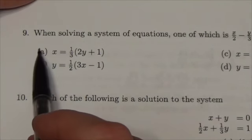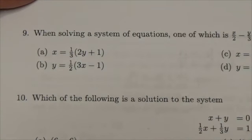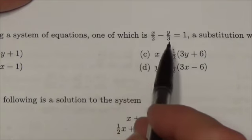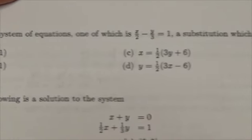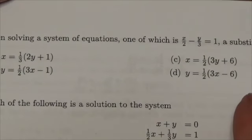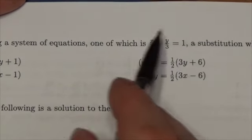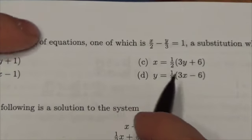Hi everybody. This question says that when solving a system of equations, one of the equations is x over 2 minus y over 3 equals 1. So it's a little ugly here. Now, a substitution which can be made is, so we're saying here that we are going to do substitutions, so we're going to have to isolate one of these variables.